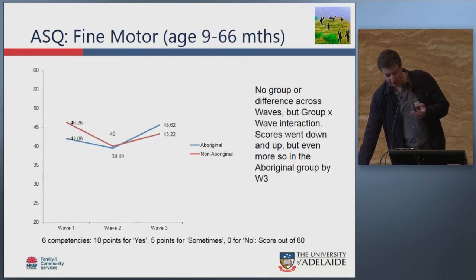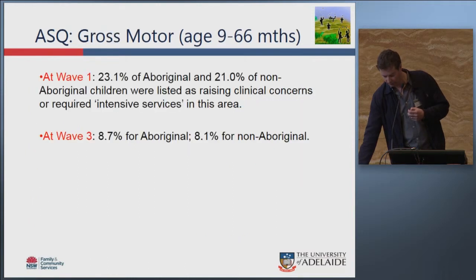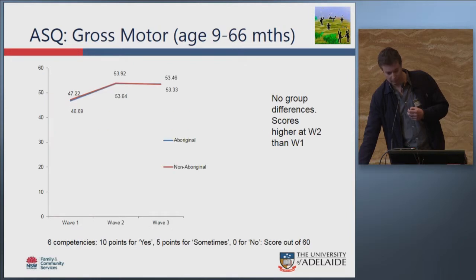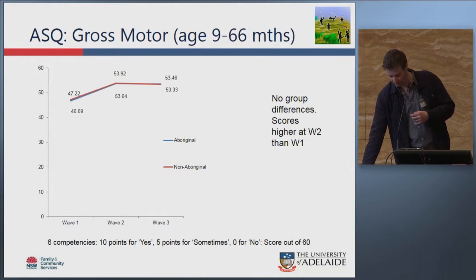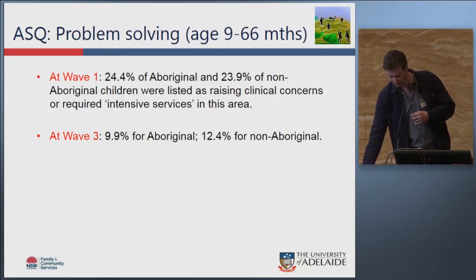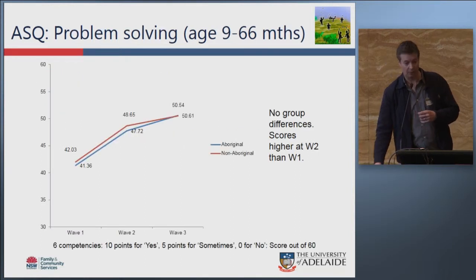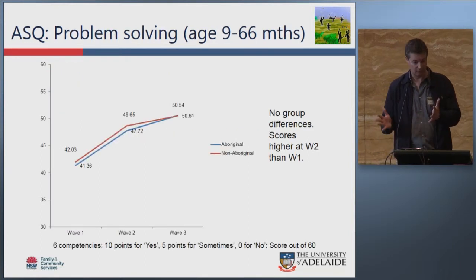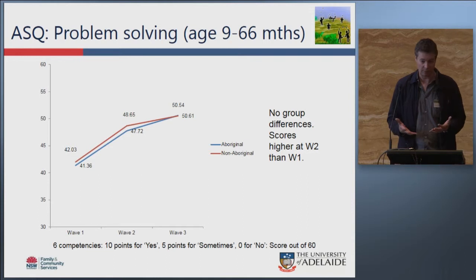For communication, fine motor skills, and gross motor development, scores were pretty much stable across time with no significant differences between the two groups — very similar trajectories for both. Problem-solving showed the same pattern, with very similar upper trajectories for the two groups.